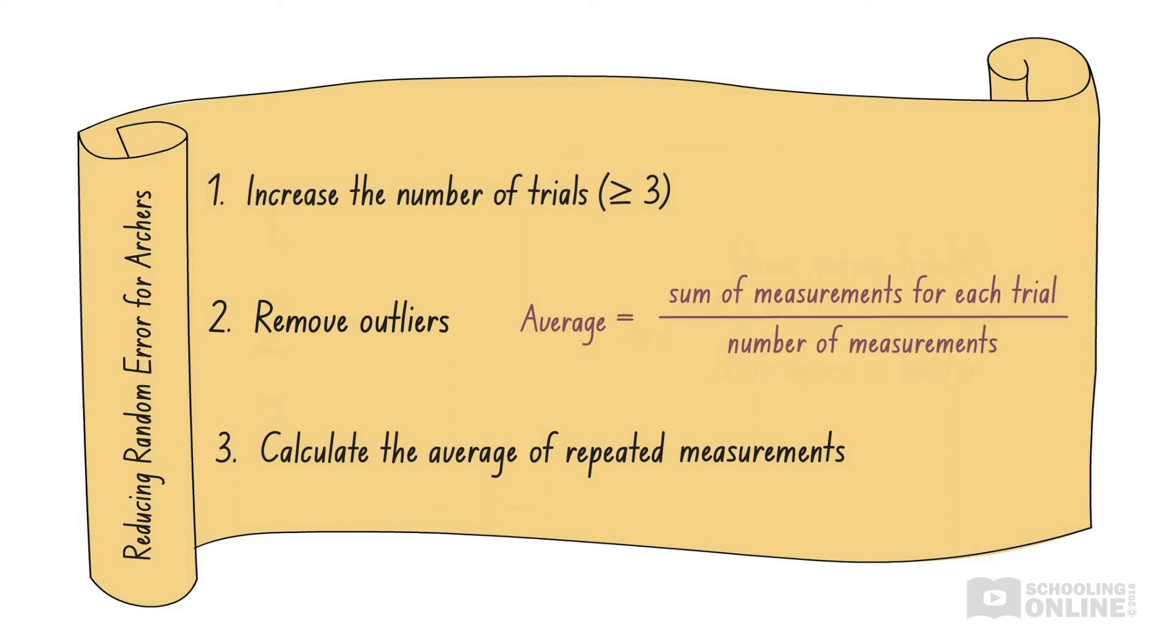When we average our results, the values that are too large will cancel out the effect of the values that are too small. Therefore, any variation caused by random errors will be smoothed out, giving a more reliable result. The more data we collect, the more reliable our average becomes.